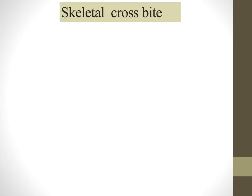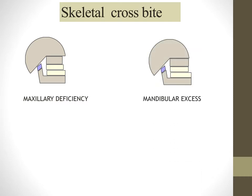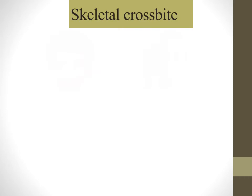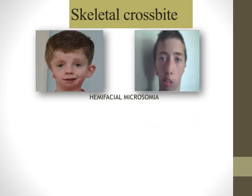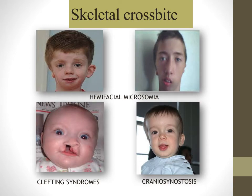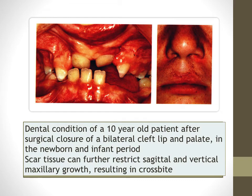We can also have a skeletal crossbite whose etiology is skeletal — the maxilla is deficient, the mandible is in excess, or a combination of both. Skeletal crossbite can be due to syndromes such as hemifacial macrosomia, clefting syndromes, and craniosynostosis. In cleft palate patients, scar tissue inhibits maxillary growth in all three directions, causing the maxilla to collapse inside the mandible — the most common crossbite we encounter as orthodontists.